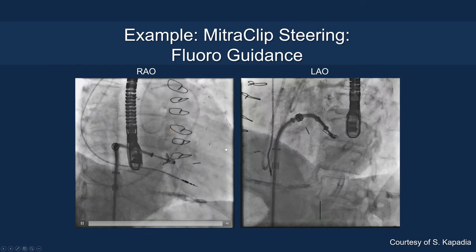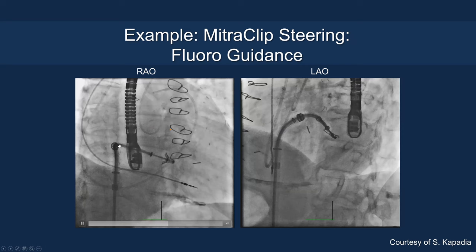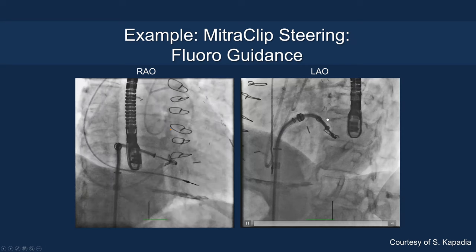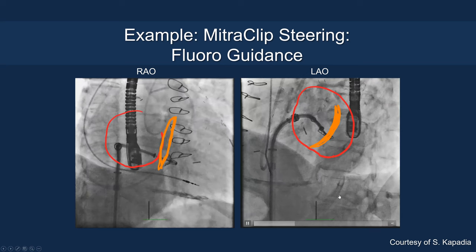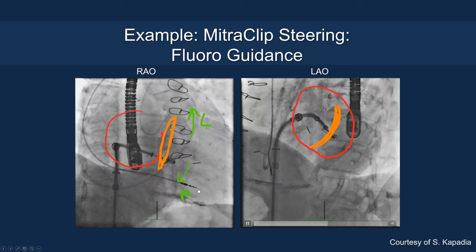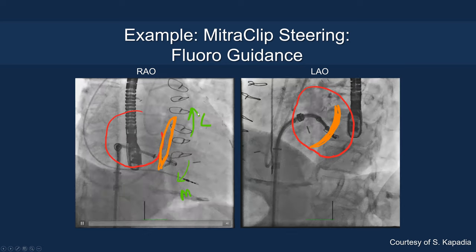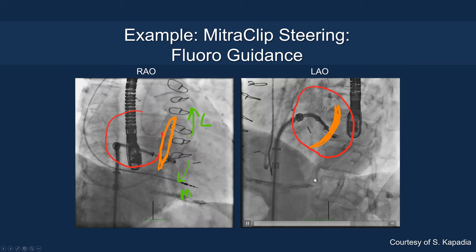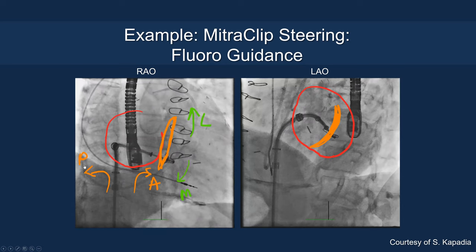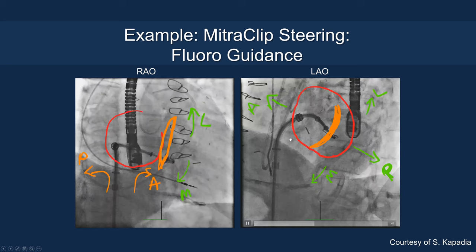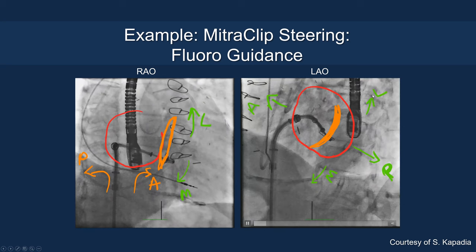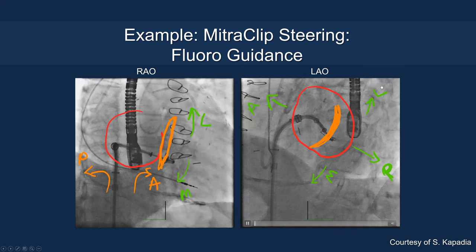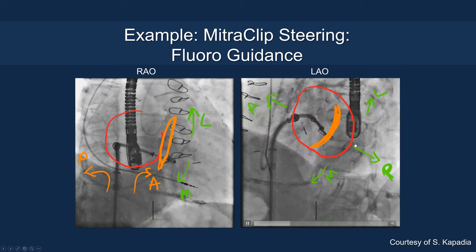Here is an example with MitraClip on the RAO view — a typical projection. On the LAO view, you can see the overlay showing more lateral versus more medial deflection, and anterior versus posterior orientation. Lateral corresponds to the upper left, and medial to the upper right of the screen on the LAO view.